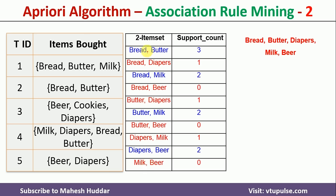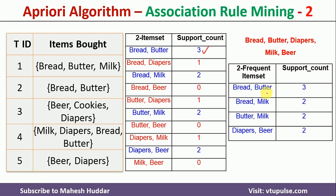Once we write the combinations, we count how many times these 2 items were bought together. For example, bread and butter were bought together 3 times. Bread and diaper were bought together only once — only in the fourth transaction. Bread and milk were bought together 2 times. We find the support count for each combination and select the 2-itemsets with a minimum support count of 2 or more. In this case, there are only 4 possibilities: bread-milk, bread-butter, butter-milk, and diaper-beer.